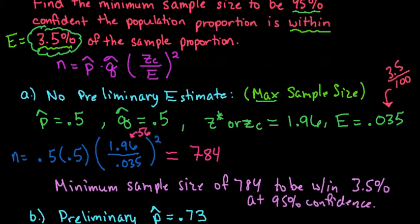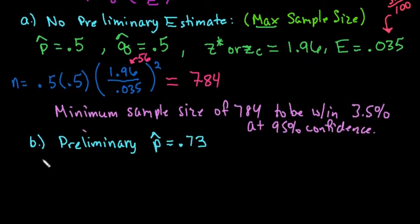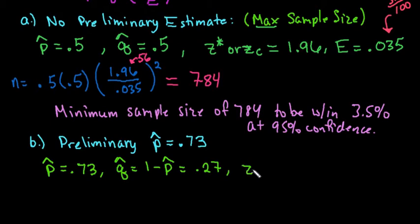The second situation that we had is we have a preliminary estimate for our p hat. We know based on a prior study that we already have a given p hat. We would simply do the same thing where we go through and find our information. Our p hat is given to us, that would be 0.73. Our q hat is found by doing 1 minus our p hat, which ends up being 0.27. The z star or zc is going to be the same thing, 1.96, and our error did not change. So the only thing that changed was our values that go in front.